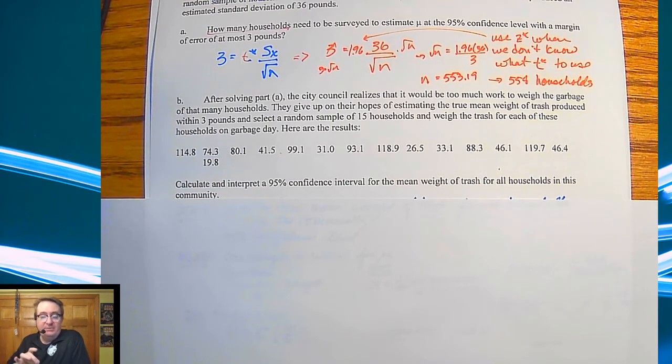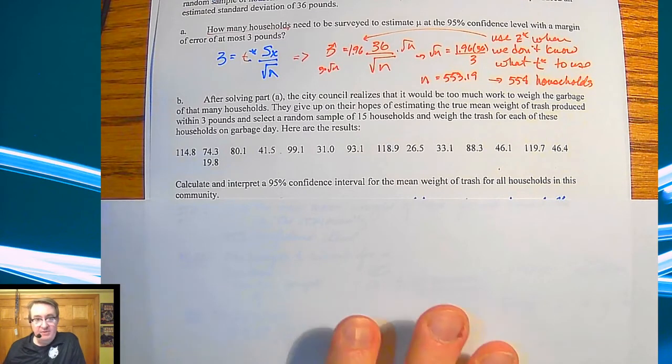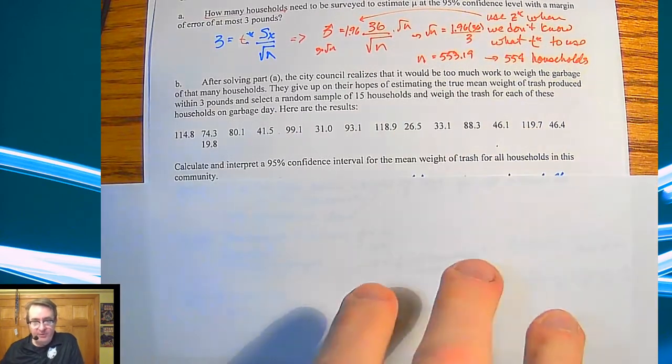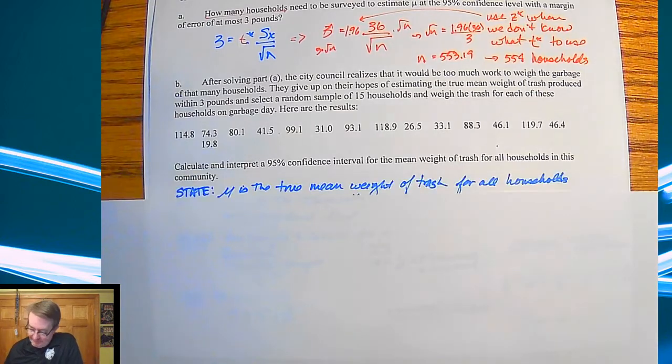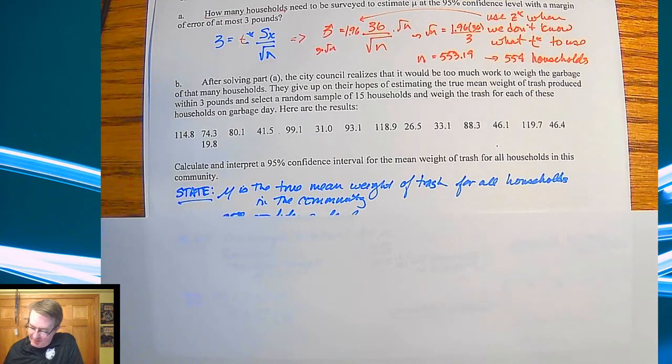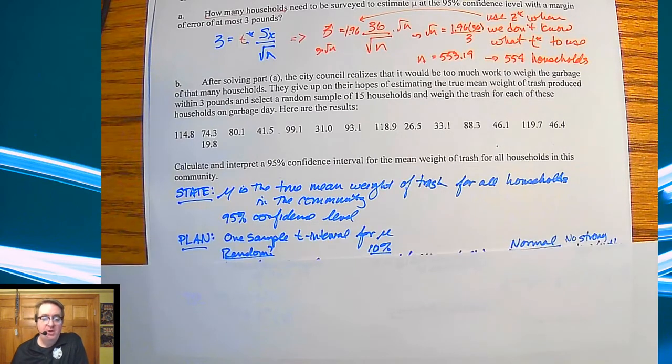Since we're giving you data here, you're going to have to go through and calculate out both the standard error and for this sample and the mean. You can do that through Stapplet, through your calculator, through list one and one variable stats, whatever you want to do. If you want to do it by hand, you're crazy, but that's okay. So after you do that, run through this and come back and check your answers.